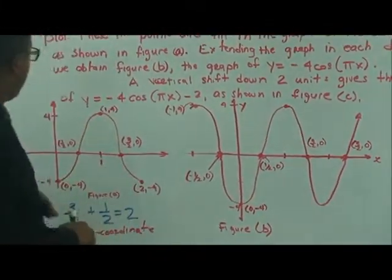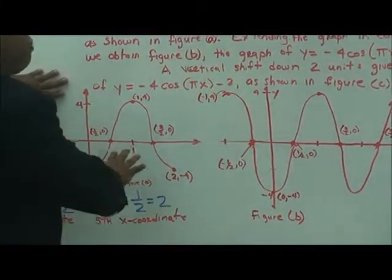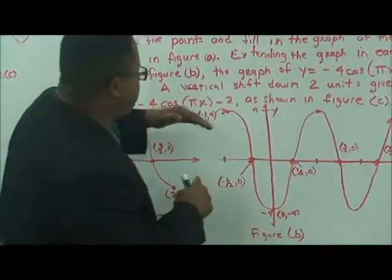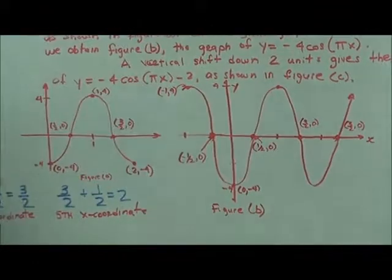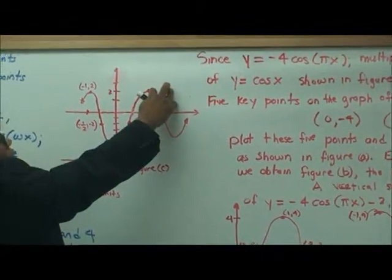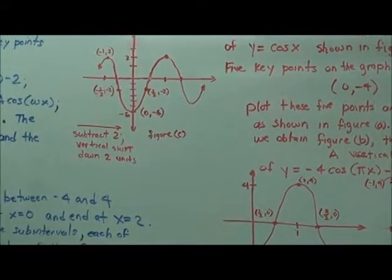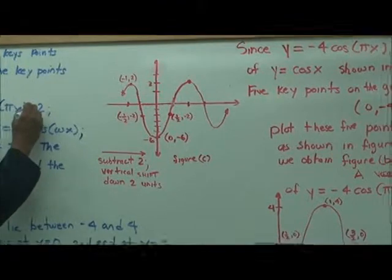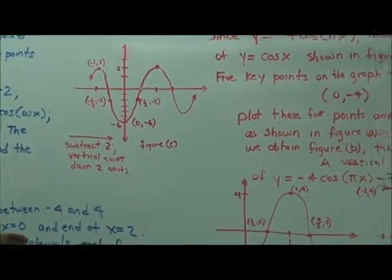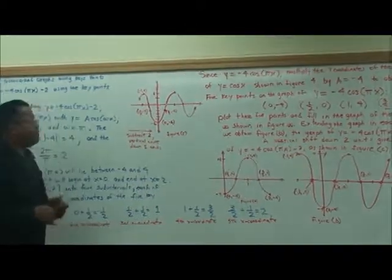Now, y equals negative 4 cosine of pi times x has a vertical shift of minus 2. The amplitude ranges from negative 4 to 4, but when we subtract 2 from the function, it shifts the graph down. So the graph shifts vertically: 2 becomes 0, and negative 4 becomes negative 6. This vertical shift is illustrated in figure C.